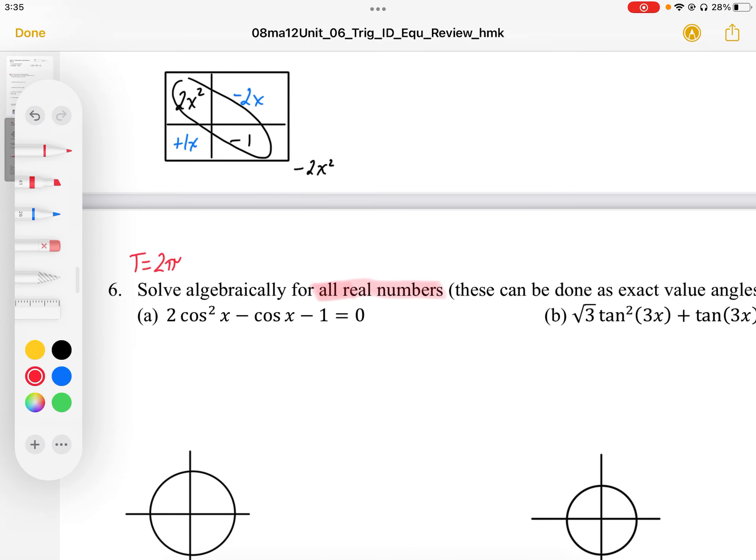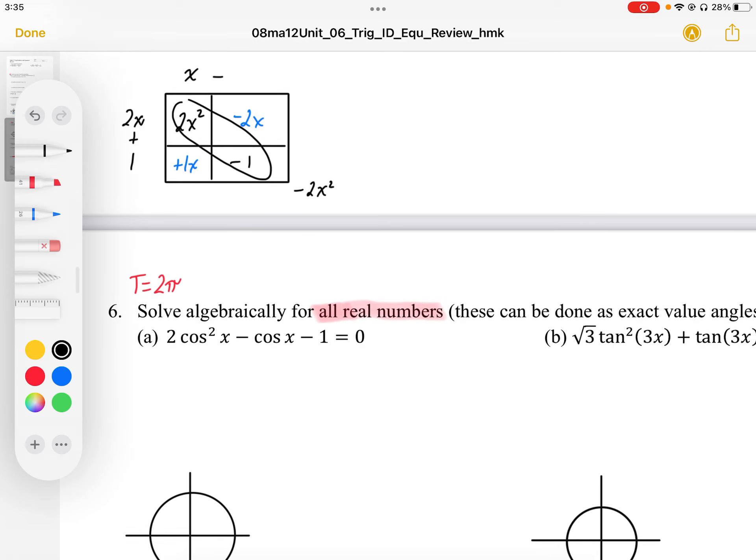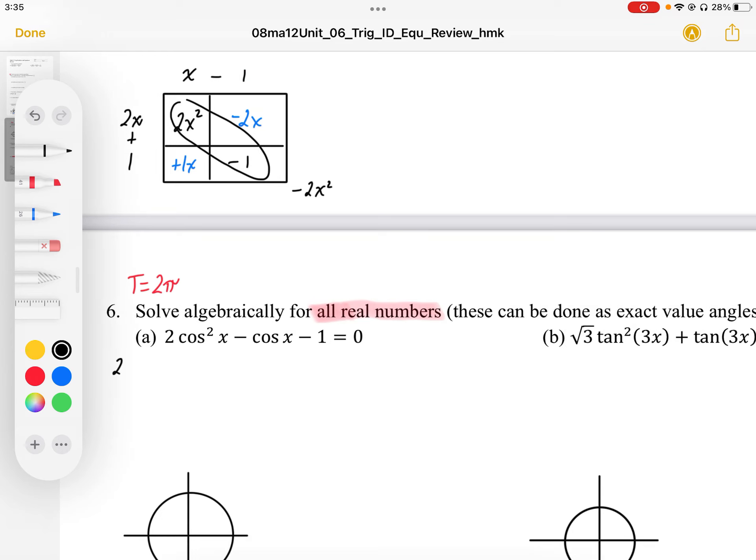To factor this, I'm going to go to my little factor square here. I'm looking for two numbers that multiply to negative 2 and add to negative 1, the middle negative cos x. I know that's going to end up being 2 this way and 1 this way, so 2x plus 1. Then I'm going to have x, and the negative is going to come out on this side. So my factored form is going to look like this: (2 cos x + 1)(cos x - 1) = 0.